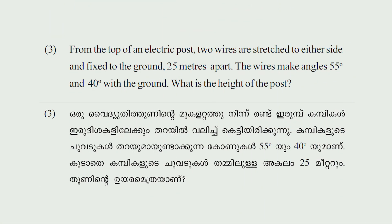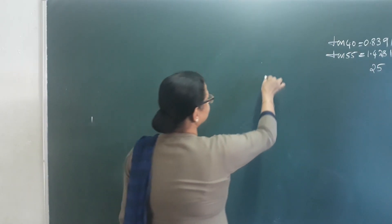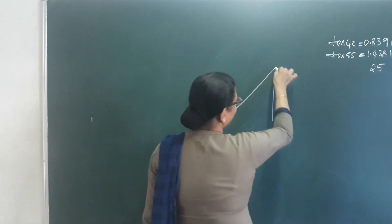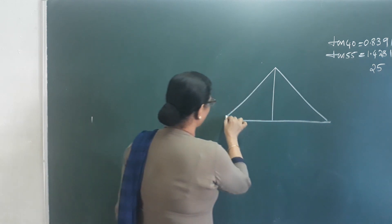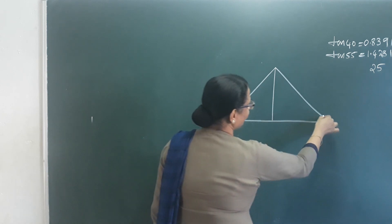From the top of an electric post, two wires are stretched to either side and fixed to a ground 25 meters apart. The wires make angles of 55 degrees and 40 degrees with the ground. What is the height of the post? An electric post — in the two sides of the post, a wire is cut from here to ground level. What is the height of the post? This forms an angle.